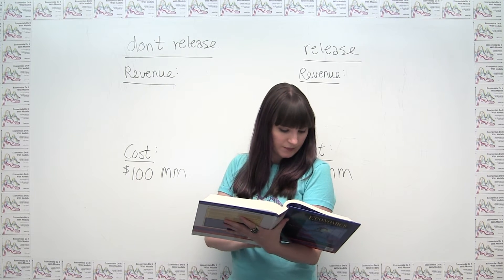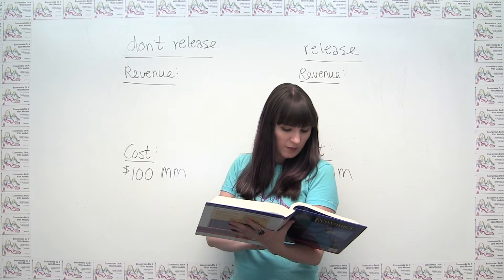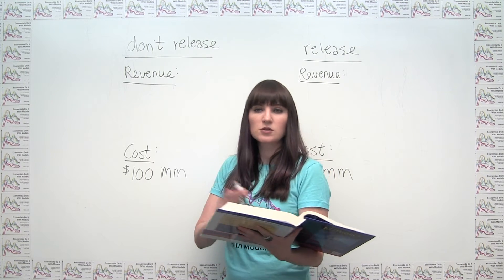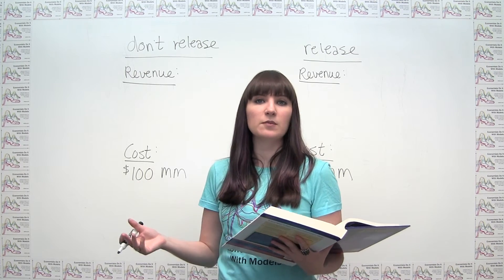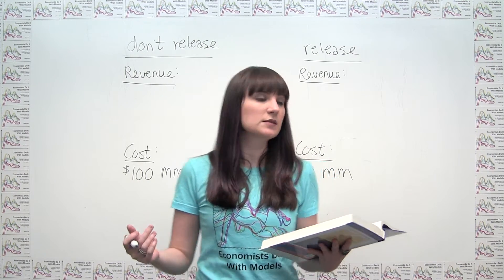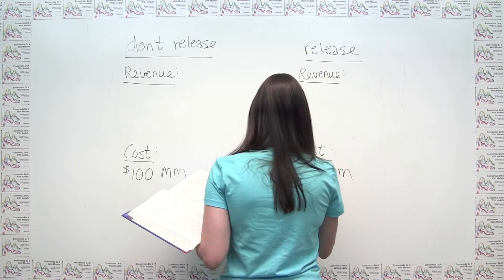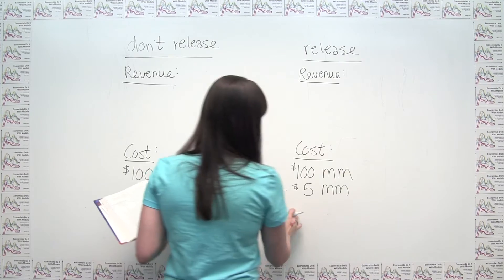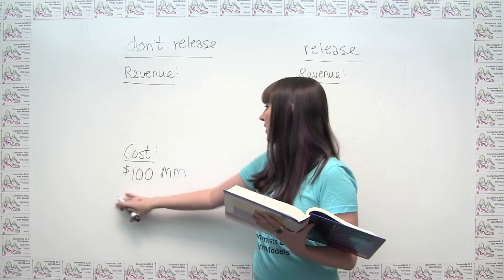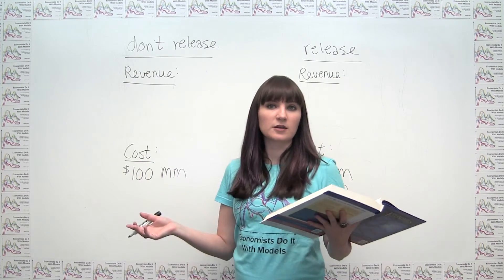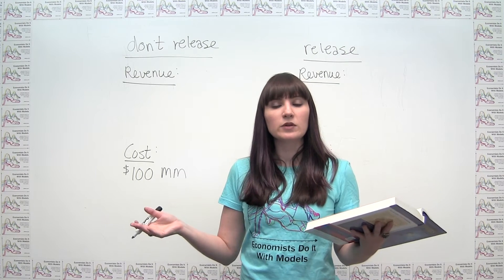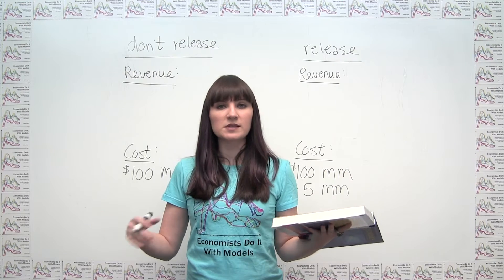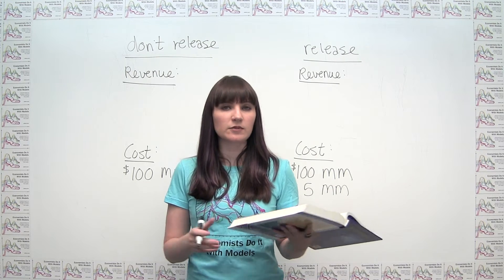The next thing we see is that the most cost-effective marketing plan would cost an additional $5 million. The marketing plan would only be in place if the film were released. So we put plus $5 million in the "release" column, but we don't put the $5 million in the "don't release" column, because that cost is not incurred if we don't actually release the movie. This marketing cost is not yet sunk — it's still recoverable if we choose not to release the film.